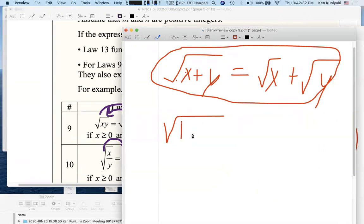Then you're claiming that the square root of 1 plus 4 is equal to the square root of 1 plus the square root of 4. On the left side, we have the square root of 5. The square root of 1, the principal square root of 1 is 1 plus the principal square root of 4 is 2.